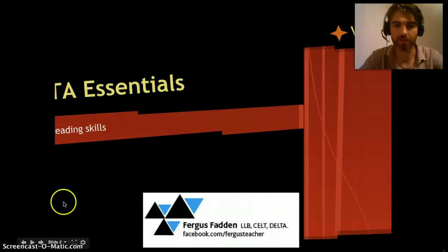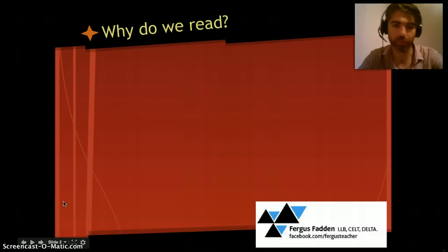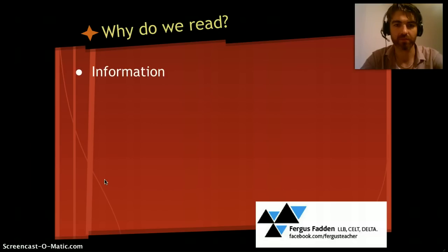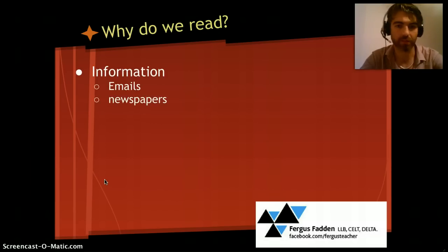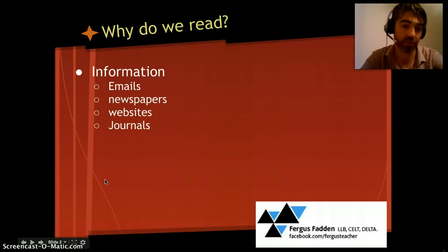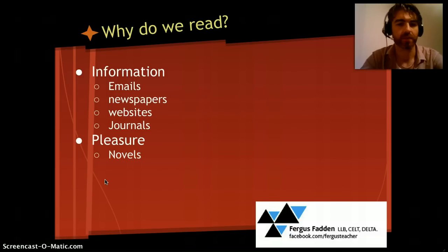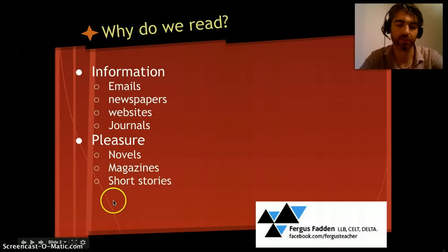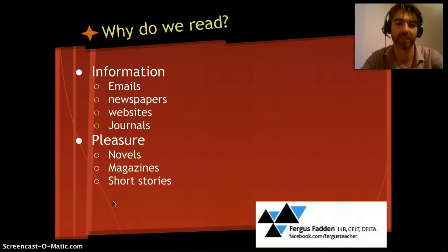So why do we read? Well, essentially we read for information — we read emails, newspapers, websites, and journals. We also read for pleasure: novels, magazines, short stories. This is a non-exhaustive list; there are many many types of text to read.